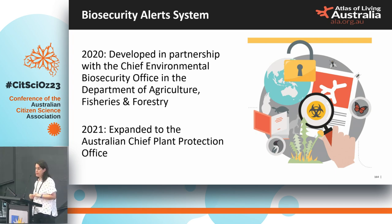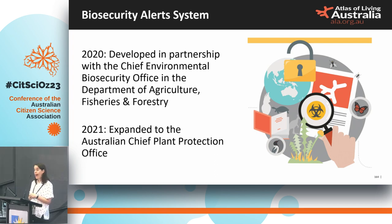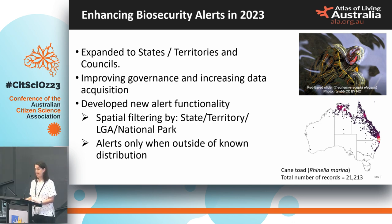With this in mind, we partnered with the Department of Agriculture, Fisheries and Forestry a couple of years ago through the Chief Environmental Biosecurity Office, and extended this partnership to the Plant Protection Office a year later. It was great to see DAFF as a sponsor of this conference, which I think recognizes their growing appreciation of citizen science. Our pilot was a simple on-premise biosecurity alert system where we take species lists from the government department and ping them with an email alert when a species of interest comes into the Atlas. We recently got additional funding from a national initiative called Catalyzing Australia's Biosecurity, enabling us to expand alerts to other states, territories, and local governments.